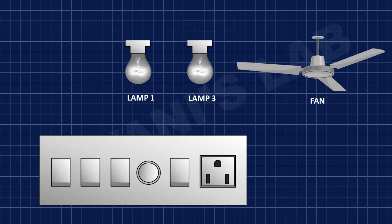So here is our switchboard. It has four switches, a dimmer, and a socket. Two switches are to control lights, one switch is for the fan, and one switch is for the socket. The dimmer is to control the fan speed.